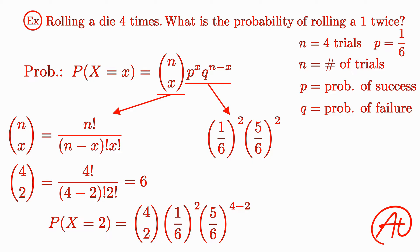Using our previous calculations, this simplifies to 6 times (1/6) squared times (5/6) squared, or 0.1157. So the probability of rolling 1 twice in 4 rolls is 11.57%.